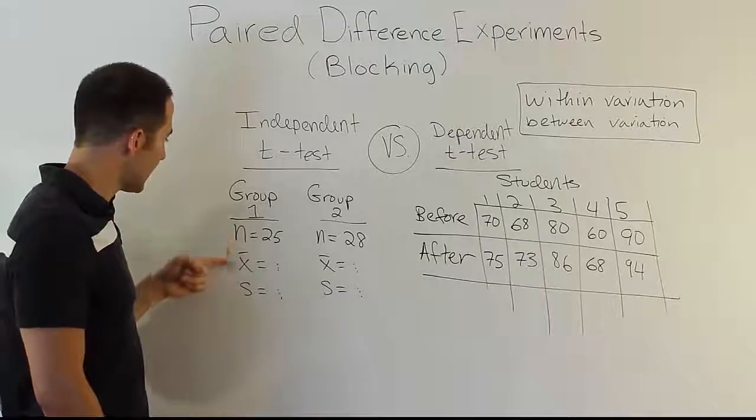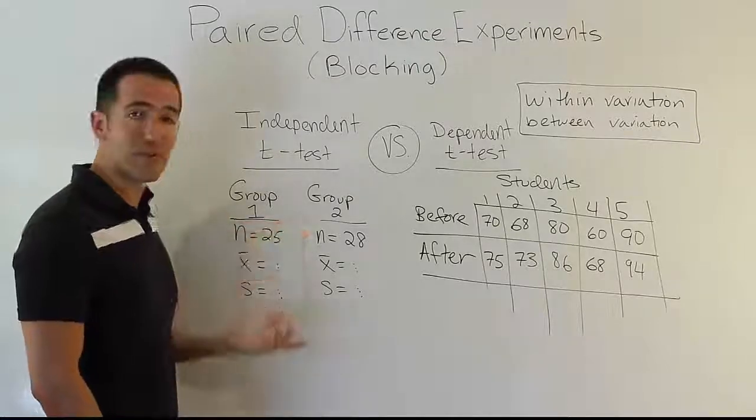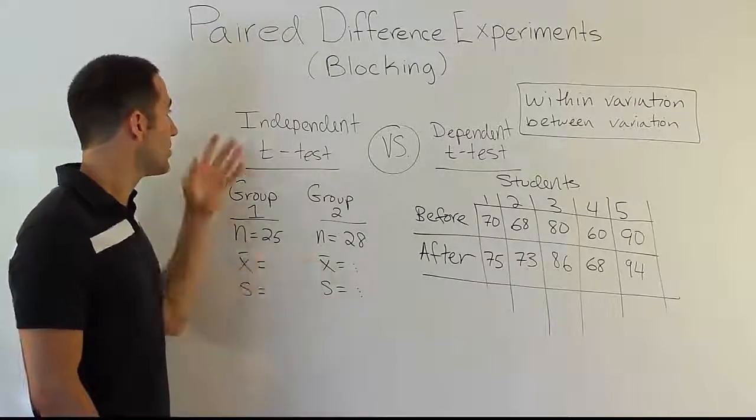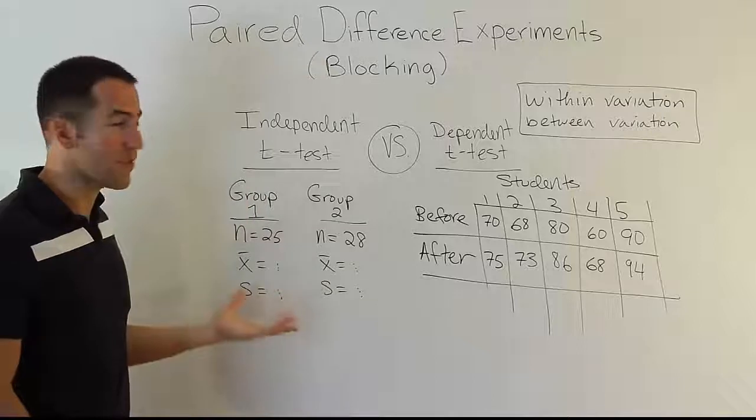For example, you can see here that I've shown that we have a different sample size from group one than we have from group two. That's entirely possible in the independent t-test. It's possible to have less of one group than another. That's perfectly okay.